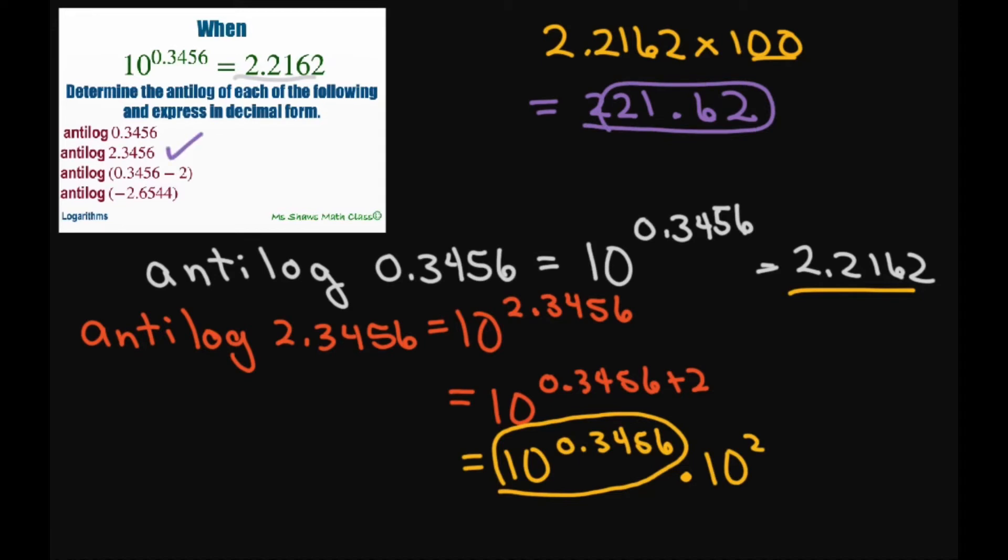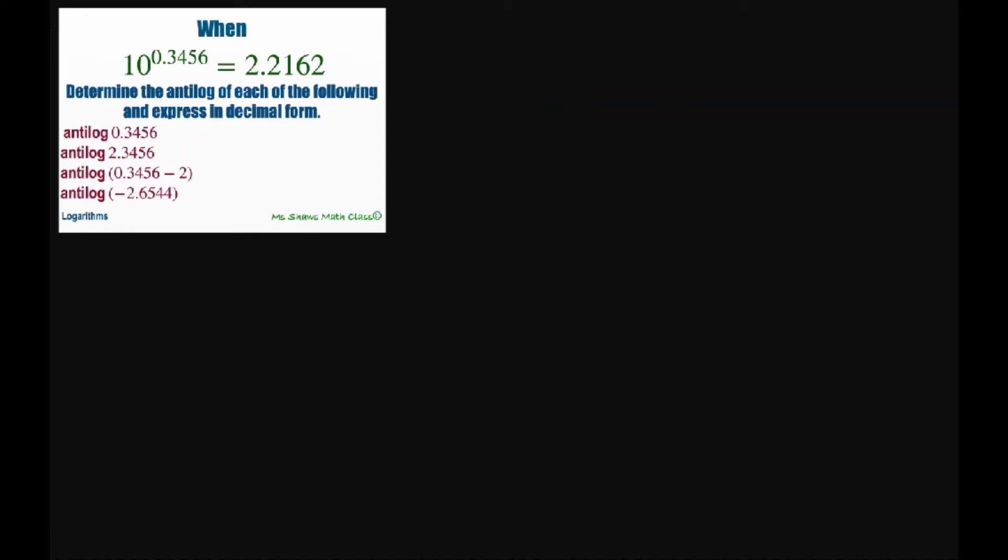All right, the last two have some negatives in them. So let's just rewrite it the way they have it written. So this is going to be 10 to the power of 0.3456 minus 2.